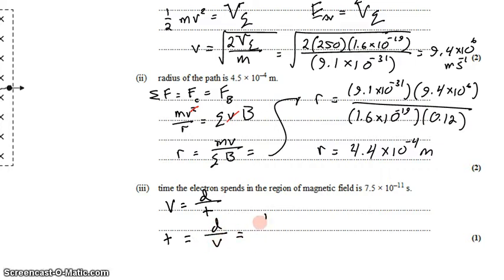It means that the time taken is going to be the distance traveled divided by the velocity. The distance traveled is just one quarter of a circle, which is 2 pi r.